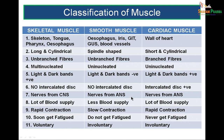Nerve supply is from the autonomic nervous system for both cardiac and smooth, but not for skeletal. Blood supply is less in smooth muscle and more in the other two types. Contractions are rapid in skeletal, slow in smooth, and rapid again in cardiac. Cardiac muscle never gets fatigued, smooth muscle fatigues very late, whereas skeletal muscle fatigues immediately. Skeletal muscle is voluntary, whereas the other two types are involuntary.